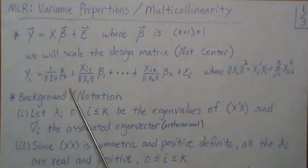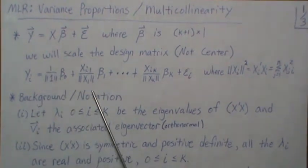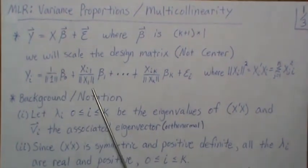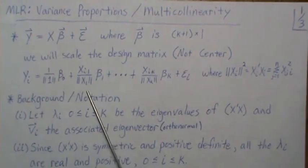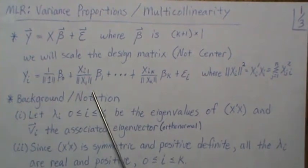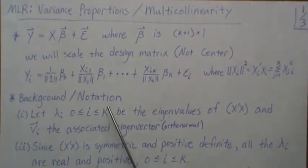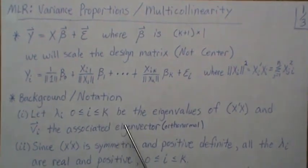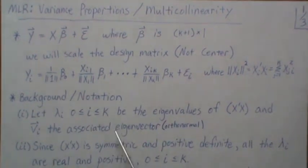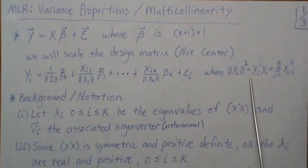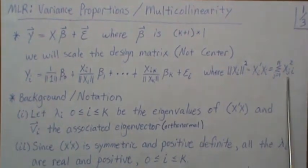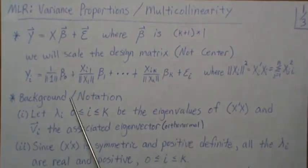This is the standard inner product that we're going to use to measure length. The squared length is just the sum of each of the components squared.